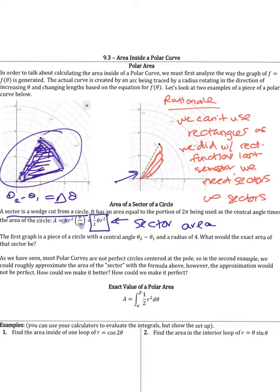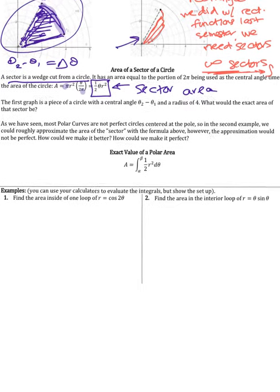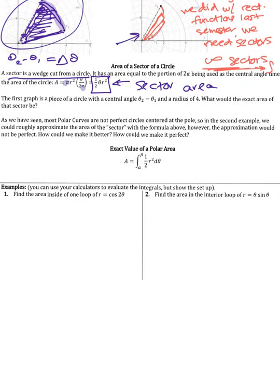If we want to find the exact area, we need to have an infinite number of sectors — an infinite number of little pie wedges, so to speak. That leads us to the idea of the exact value of polar area, because anytime we're talking about an infinite number of something like this, that leads us to the idea of integration.